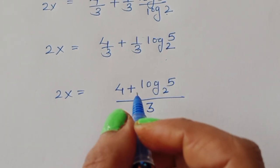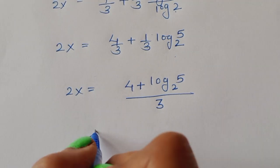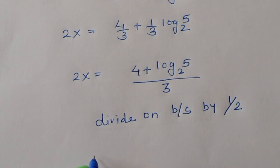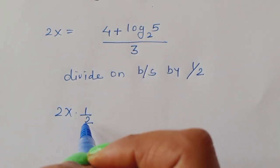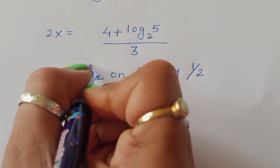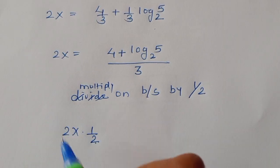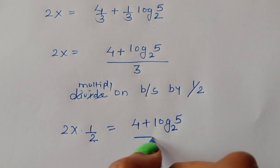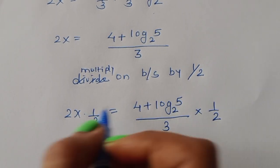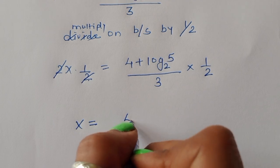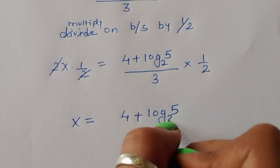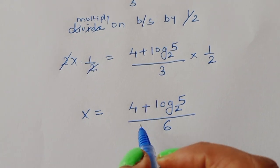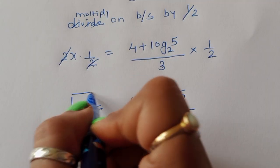Now we have to find the value of x, so we multiply both sides by 1/2. Then 2x × 1/2 = [4 + log₂(5)] / 3 × 1/2. The 2 cancels on the left side, giving x = [4 + log₂(5)] / 6. This is the value of x. Now let's verify whether this is correct.